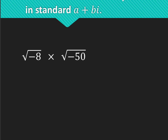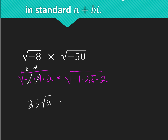This question, we are multiplying two radicals. But notice there's an i underneath, so the first thing we need to do is simplify — we've got to get that negative 1 out from underneath the radical. So this is negative 1 times 4 times 2, and this would be negative 1 times 25 times 2. Over here on the left, the square root of negative 1 is i, the square root of 4 is 2, so you have 2i square root of 2. Over here the square root of negative 1 is i, the square root of 25 is 5, so I have 5i square root of 2.